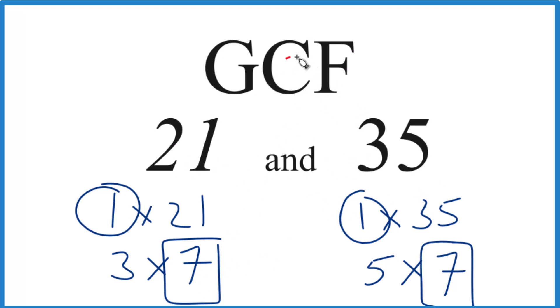So the greatest common factor for 21 and 35 is 7. There are other ways to do this, but for smaller numbers, this is usually quickest and most efficient. This is Dr. B, thanks for watching.